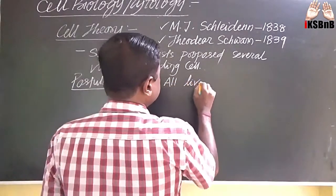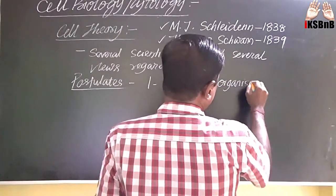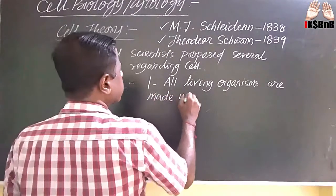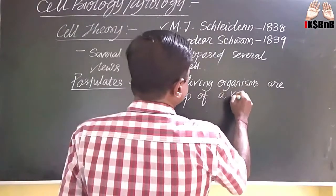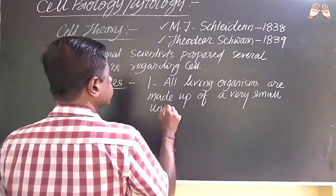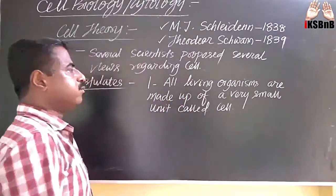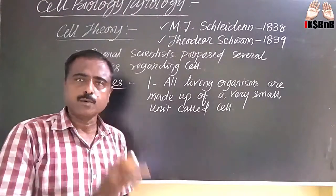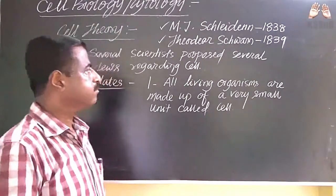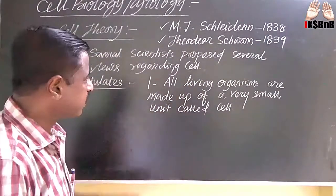Number 1: All living organisms are made up of a very small unit called the cell.